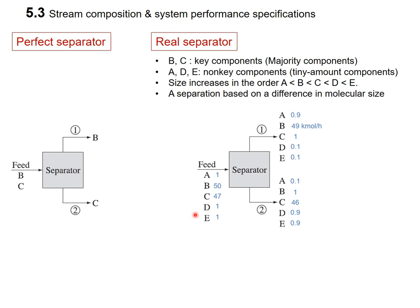This mixture is introduced into the separator. Of course, we have two different streams: stream 1 (top stream) and stream 2 (bottom stream). For both streams, unfortunately, you find all components — A, B, C, D, E.